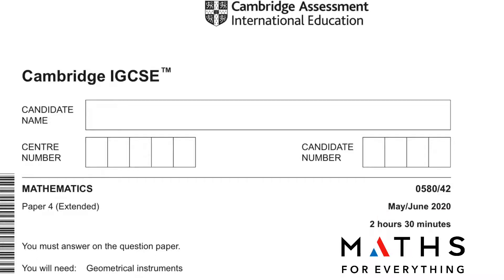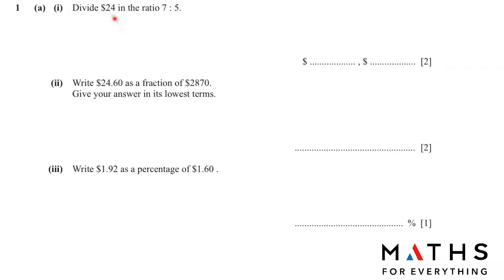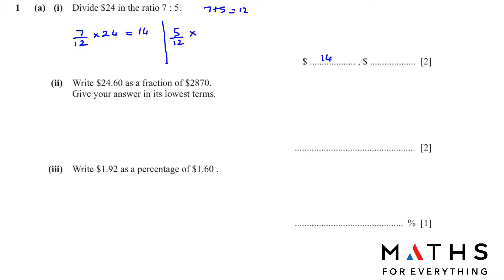May/June 2020. Let's start. Divide 24 in the ratio 7:5. Total parts: 7 plus 5 is 12. So 7 over 12 of 24 will give us 14, and to find 5 over 12, we do 5 over 12 multiplied by 24, which gives us 10.